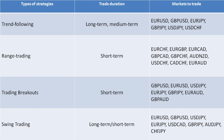Range trading means attempting to make purchases near the bottom end of the range and selling at the top of the range. We can call the bottom end support and the top resistance. The success of this strategy depends on the ability to buy an asset after selling makes the price fall to an oversold condition.